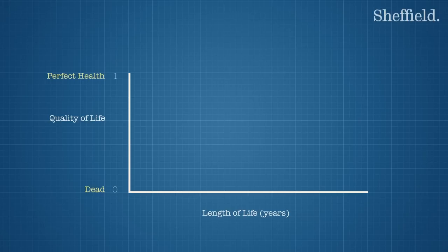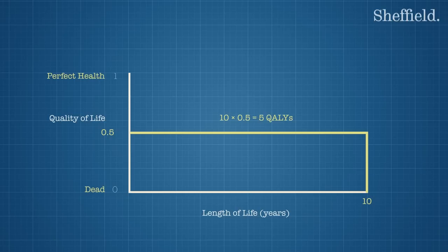For example, 6 years lived in perfect health valued as 1 would give 6 times 1 which equals 6 QALYs. 10 years lived at a quality of life valued as 0.5 would give 10 times 0.5 which equals 5 QALYs.